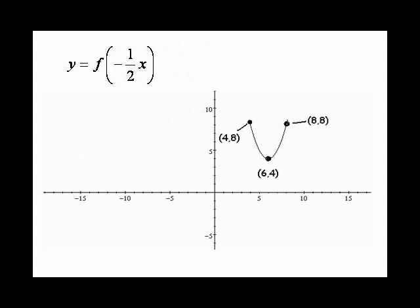I'm going to do it in two steps. I'm going to do the reflection first. When I do the reflection, it's only the x-coordinate that's affected. This point (4, 8) will transform to (-4, 8) on the reflected graph. Then we have (-6, 4) for that second point, and then (-8, 8) for the third point. That would be y equals f(-x). That's not our final answer, but that takes care of the reflection.